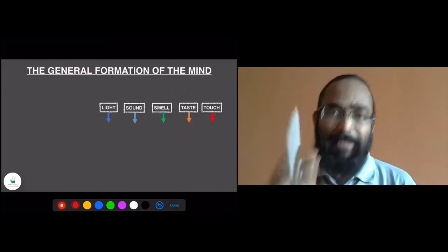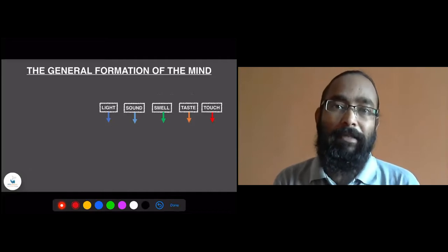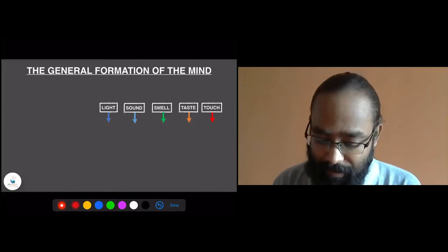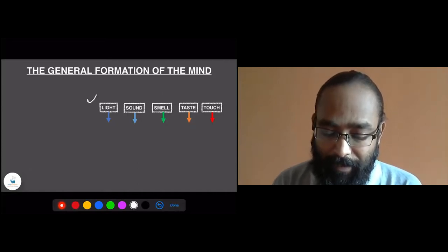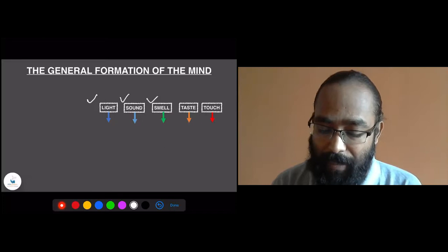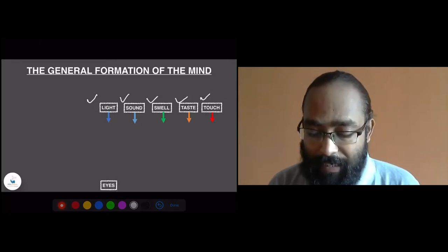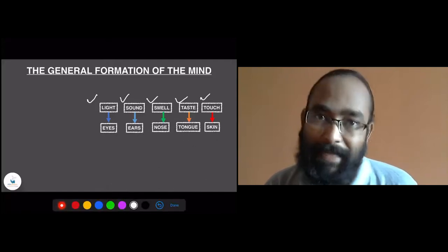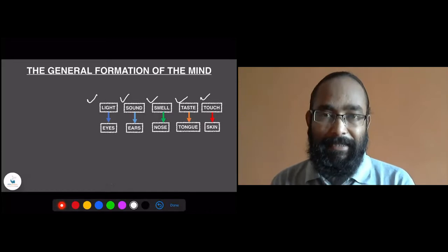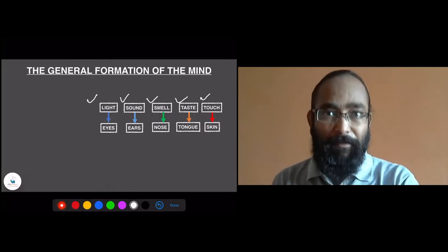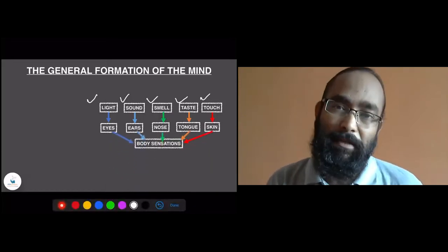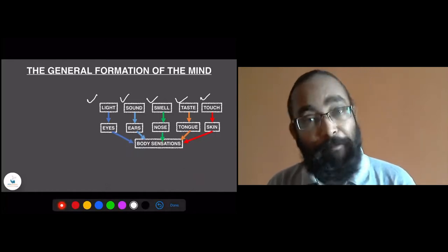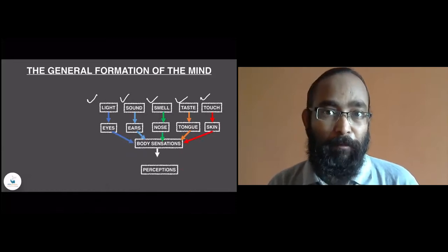Let's try to understand a general framework of the formation of mind. The physical realities — light, sound, smell, taste, and touch — enter through the eyes, ears, nose, tongue, and skin. Whenever they enter, it's a physical entry. Physical entry will create some or other body sensations for sure. Those body sensations are then perceived by us.